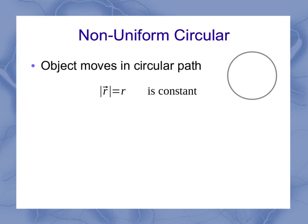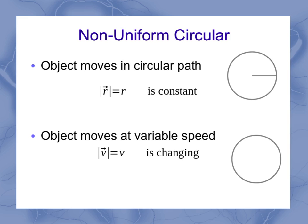For non-uniform circular motion, I still have the object moves in a circular path with a constant radius. But now the object moves at a variable speed, so my V is changing at different points around the circle.